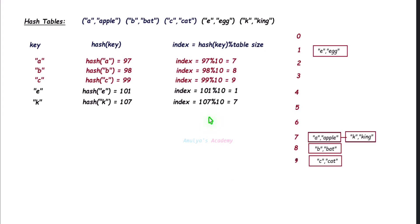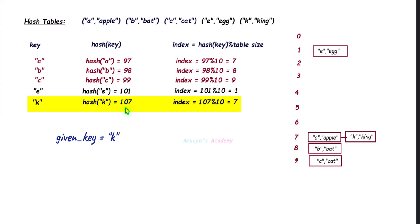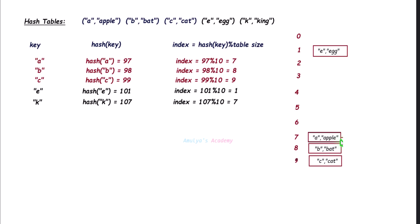Here we have an example. This hash table contains 5 key-value pairs and we are using the chaining method to handle collisions, so we use linked lists. I want to delete the key-value pair 'k' (king), so the given key is 'k'. Find its hash code — 107 — and index — 7. Go to index 7 and check if the slot is empty. It's not empty, so search through the linked list for that key. We find the key and delete that key-value pair. After deletion, maintain the linked list.